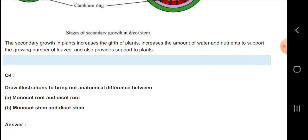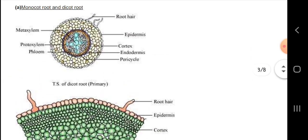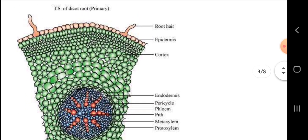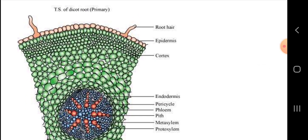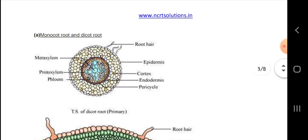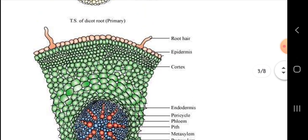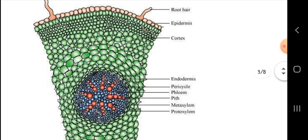Now let us know about monocot root and dicot root. Monocot root has metaxylem, protoxylem, phloem, root hairs or trichomes, epidermis, cortex, endodermis, and pericycle. Dicot root has root hairs, epidermis, cortex, endodermis, pericycle, phloem, metaxylem, and protoxylem.